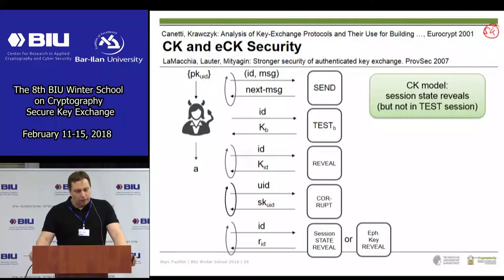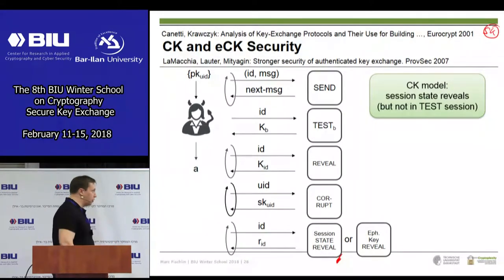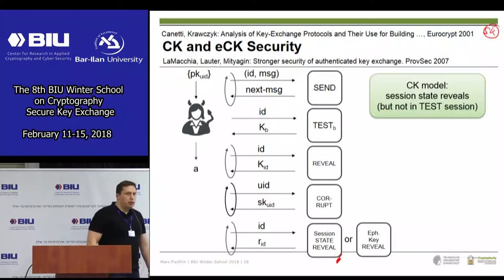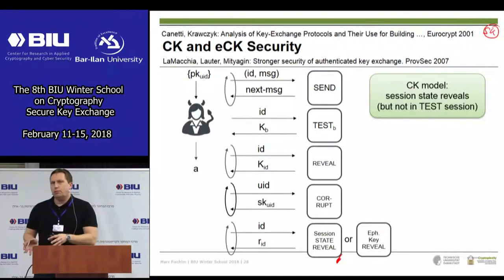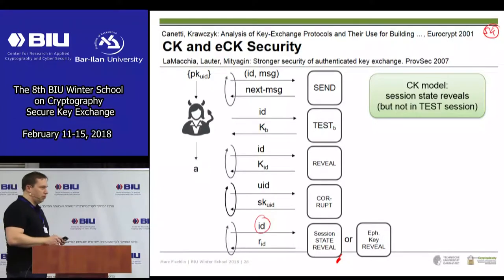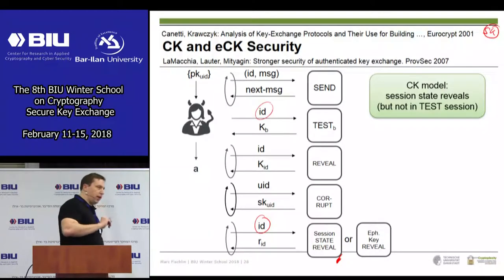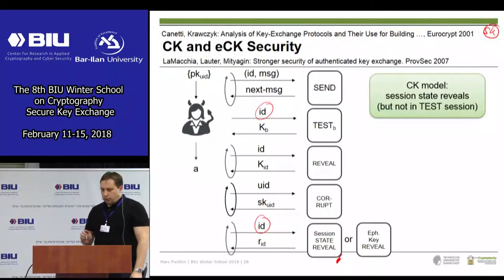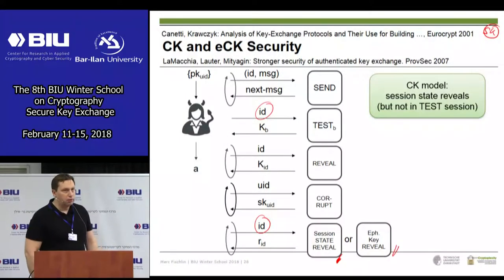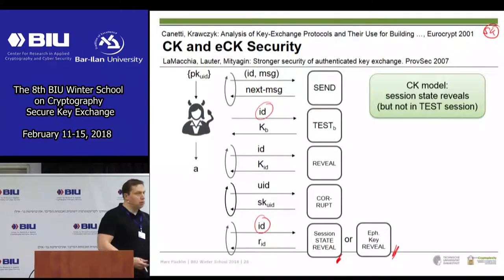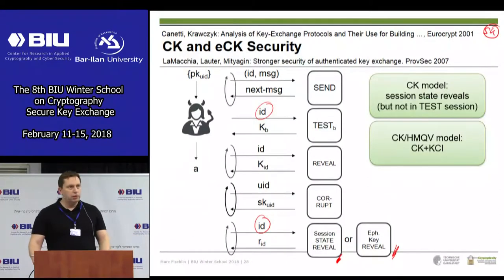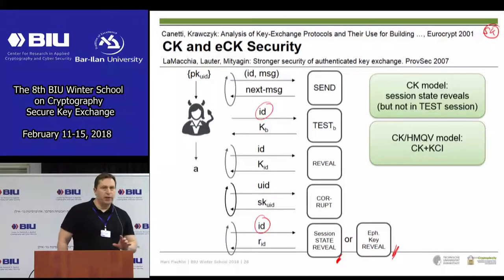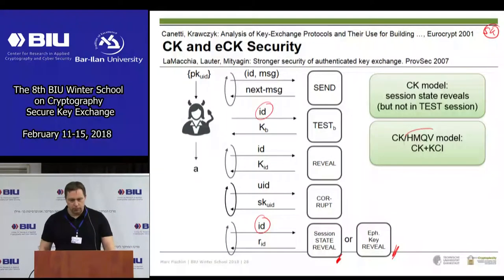There are two cases to distinguish. One is that I get the ephemeral key — in TLS that would be g^x, so it's the exponent x. Or you get the complete state including the randomness, which from the theory of multi-party computation means you get full access to all inner values the party has.